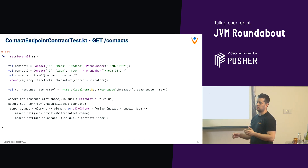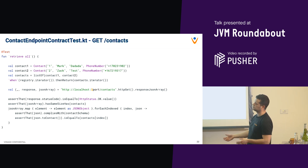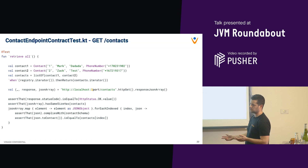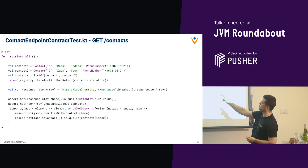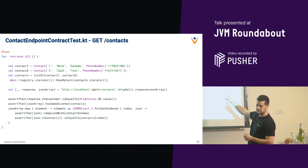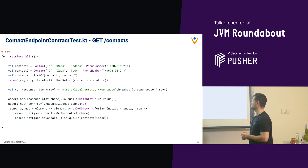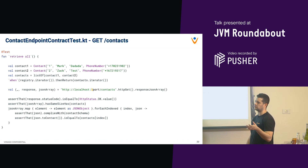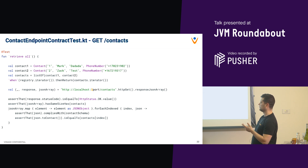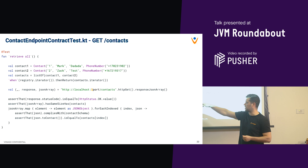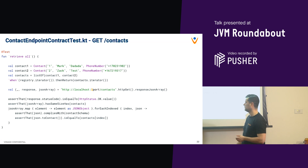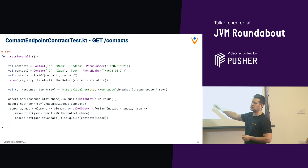For the retrieval (GET all) test: you create two contacts and put them in a list, set registry.getAll to return those two as an iterator, construct the request URL, and read the response as a JSON array. You check the status code is OK, verify the array size matches the expected contacts list size, then for each element as a JSON object check that it complies with the contact schema and that parsing it maps to the corresponding contact in the list.